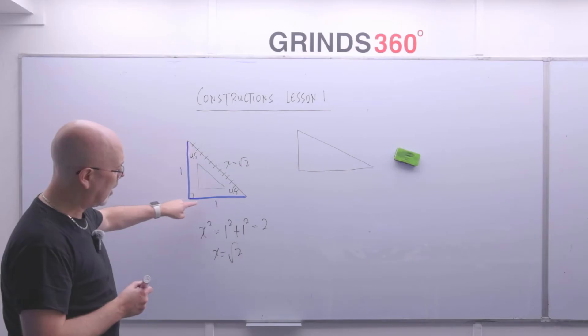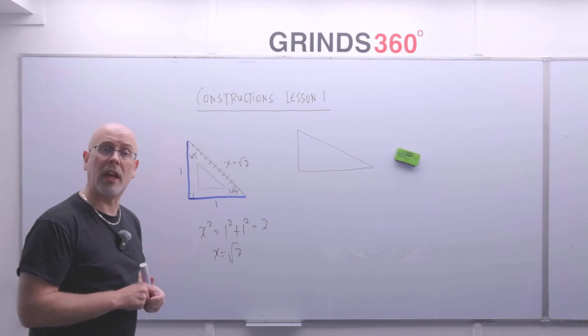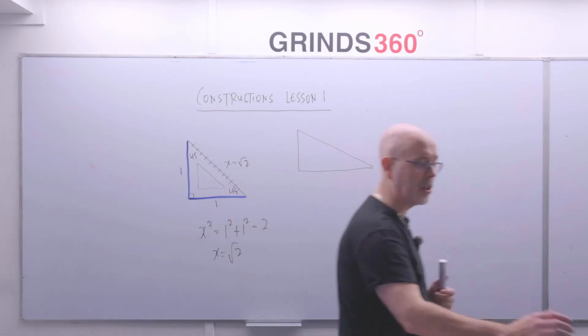Now if I've got a line segment one unit long, if I can draw another line segment the same length at right angles to that, join these two together, there's the root two I'm looking for. Okay, that's how I'm going to do this particular construction.